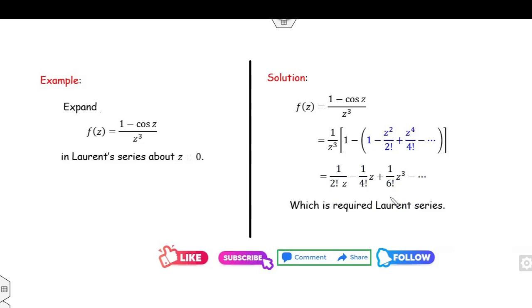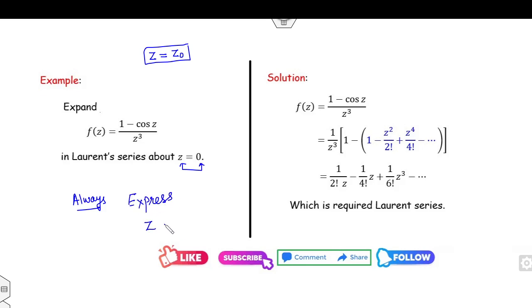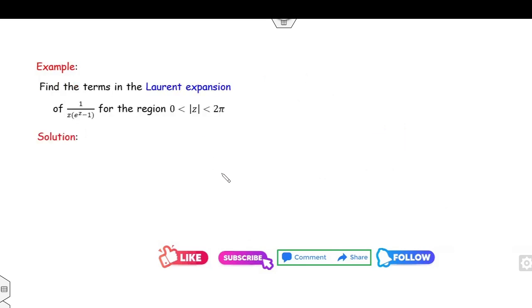Make sure your target is to find the series about z = z₀. Always remember to express each value of z in terms of (z - z₀). In this particular example z₀ = 0, so I express every quantity in terms of (z - 0).